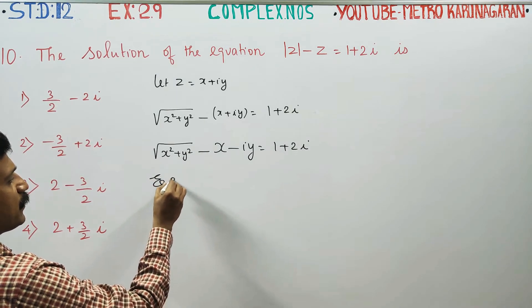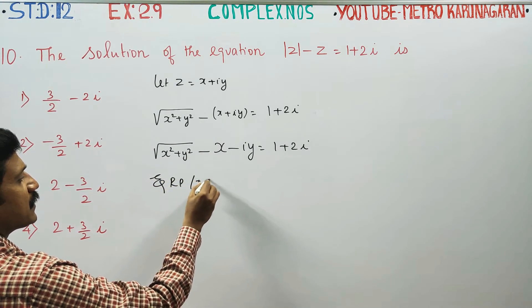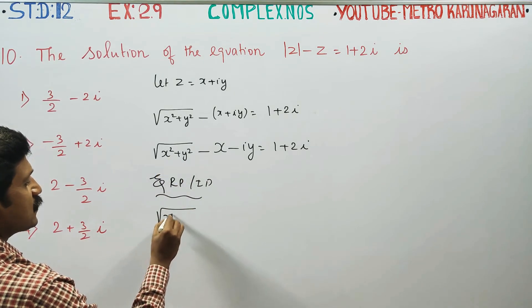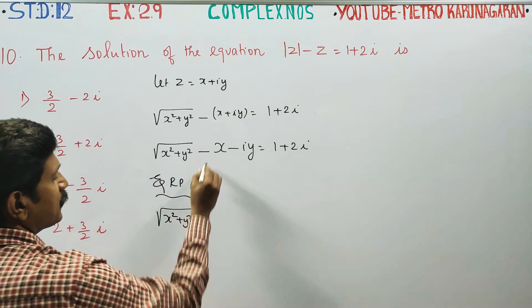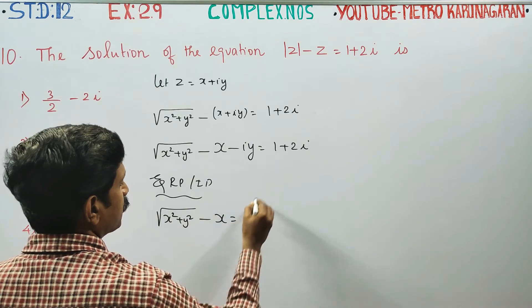Equating the real part and imaginary part. The real part is square root of x square plus y square minus x, which equals 1.